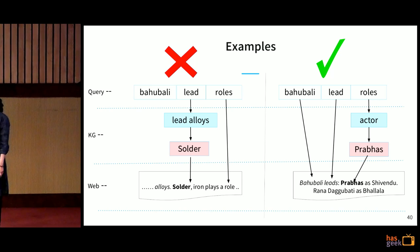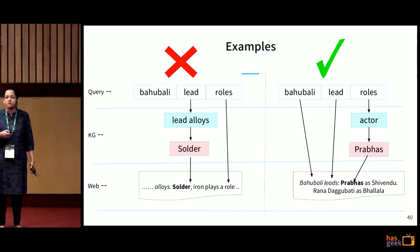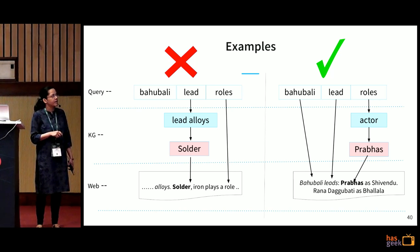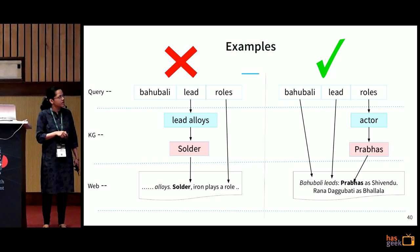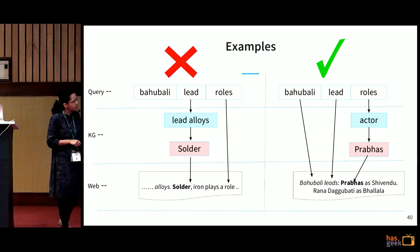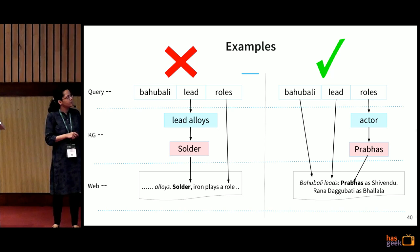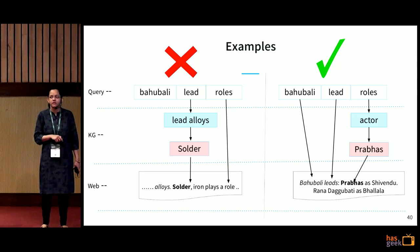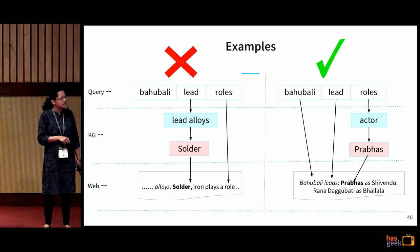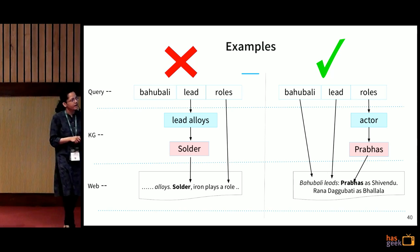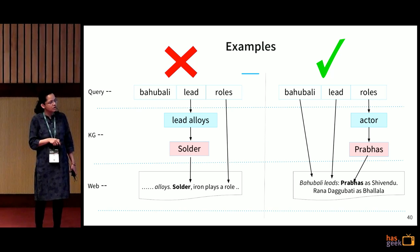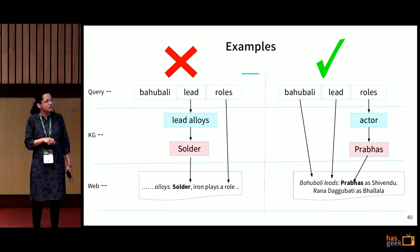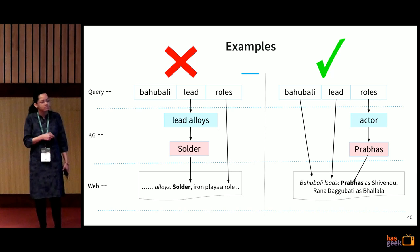Some examples of why combining both works better: if the query is 'Bahubali lead roles' and the model erroneously chose the type 'lead alloys,' the entity solder of type lead alloys would appear, and query word 'role' might also appear. However, there won't be many such snippets, and importantly the query word 'Bahubali' won't occur nearby. So this entity gets a very low score. On the other hand, when the right translation maps 'roles' to type 'actor' and Prabhas is connected to actor and also mentioned in web text along with other query words with many such snippets, Prabhas gets a much higher score than solder.